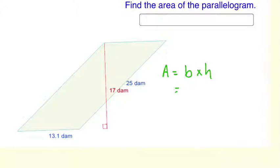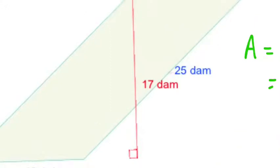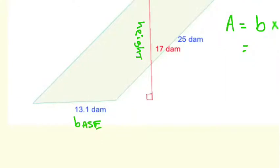Now the base is the 13.1. Notice it's perpendicular. So this is the base. And that's perpendicular to the height. Alright, so here's your height. And they are at 90 degrees. This symbol here means 90 degrees.